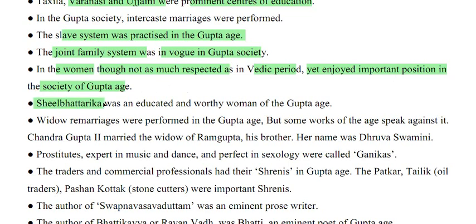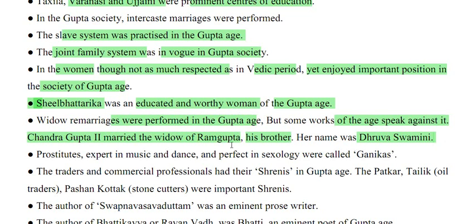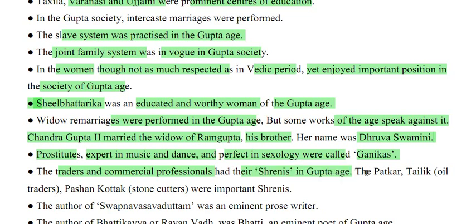Seel Bhatrika was an educated and worthy woman of the Gupta age. Widow remarriages were performed, but some books of the age speak against it — Chandragupta too married the widow of his brother Ramagupta; her name was Dhruva Swamini. Prostitutes expert in music, dance and sexology were called ganikas. The traders and commercial professionals had their srinis; important srinis included Patkar, Telik (oil traders) and Pashan Kotak (stonecutters).